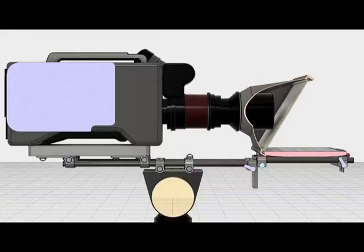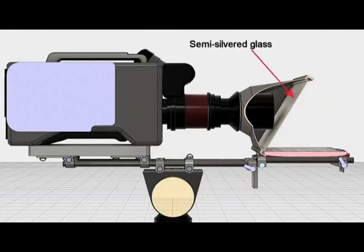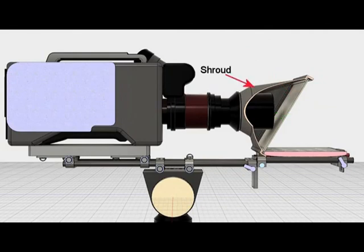The words on the screen are reflected into the eyes of the presenter using a sheet of semi-silvered glass. Light from the performer passes through the front side of the glass into the lens, while a shroud surrounds the lens and the back side of the glass, preventing unwanted light from entering. They appear to have memorized the speech or to be speaking spontaneously and so can maintain eye contact with the audience, making what they're saying that much more credible.